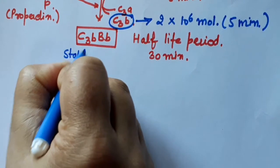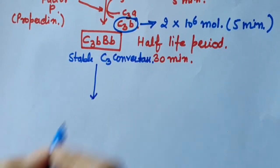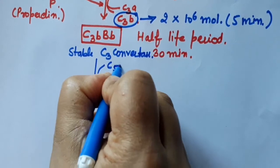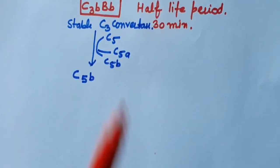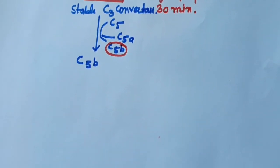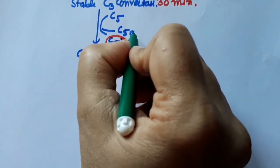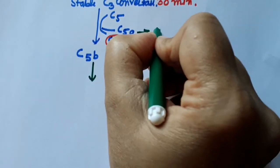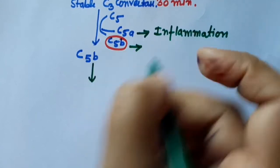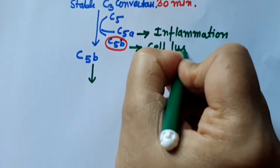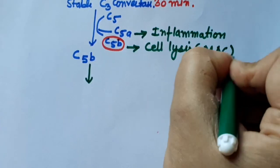Now this stable C3B convertase converts C5 into C5A and C5B. C5B being the active component participates in the cascade, and the rest of the process will be the same as it was in the classical pathway. C5A does inflammation reaction and C5B helps in cell lysis. So our three things have been done: inflammation, opsonization, and cell lysis. Cell lysis is also called membrane attack complex.